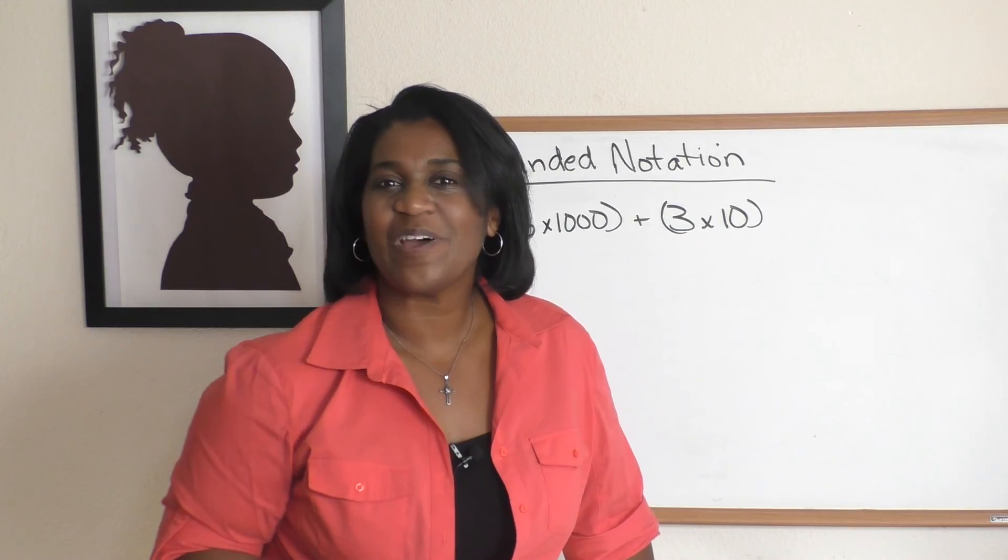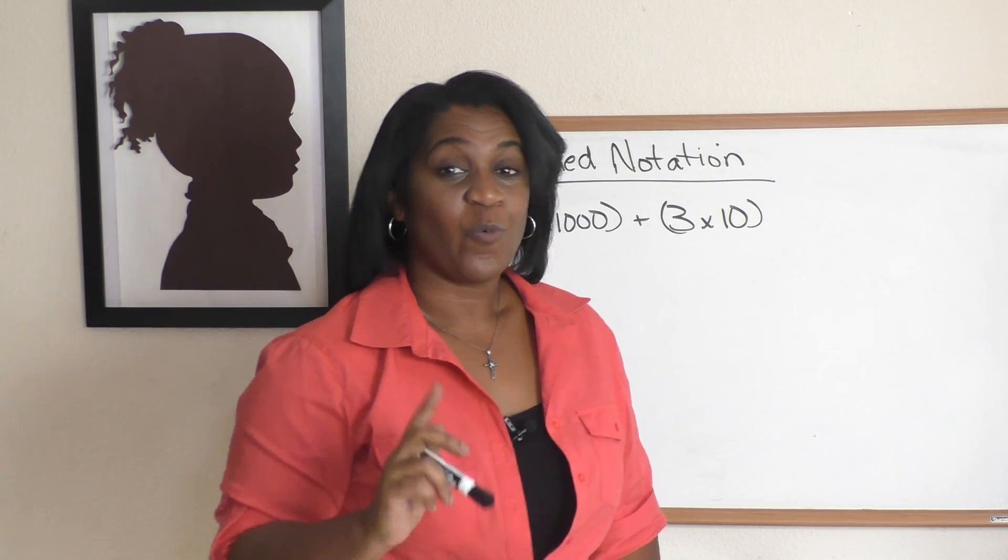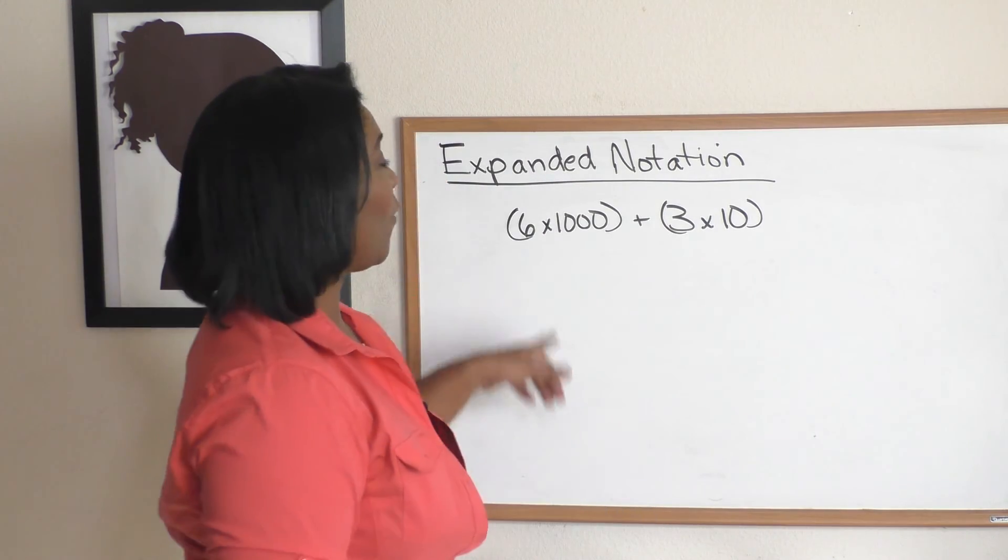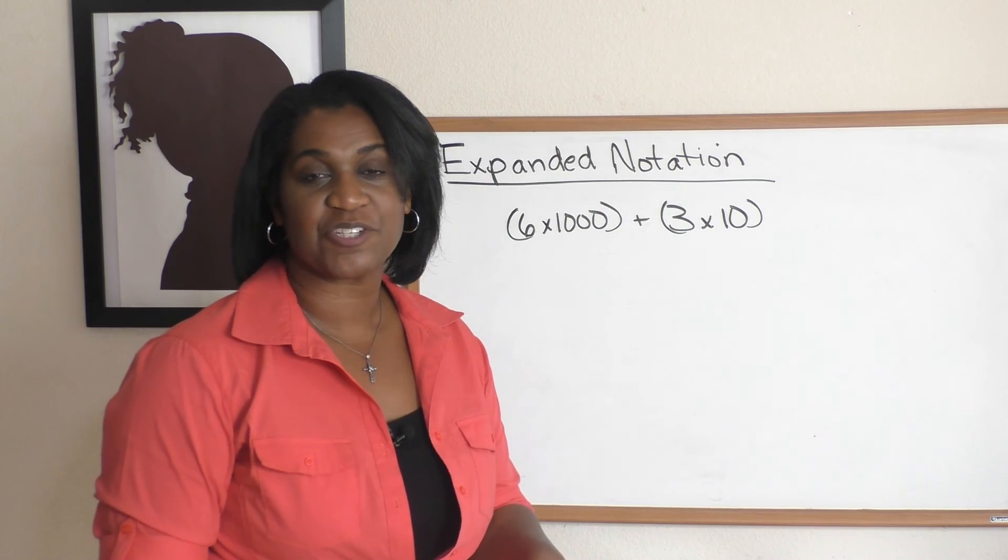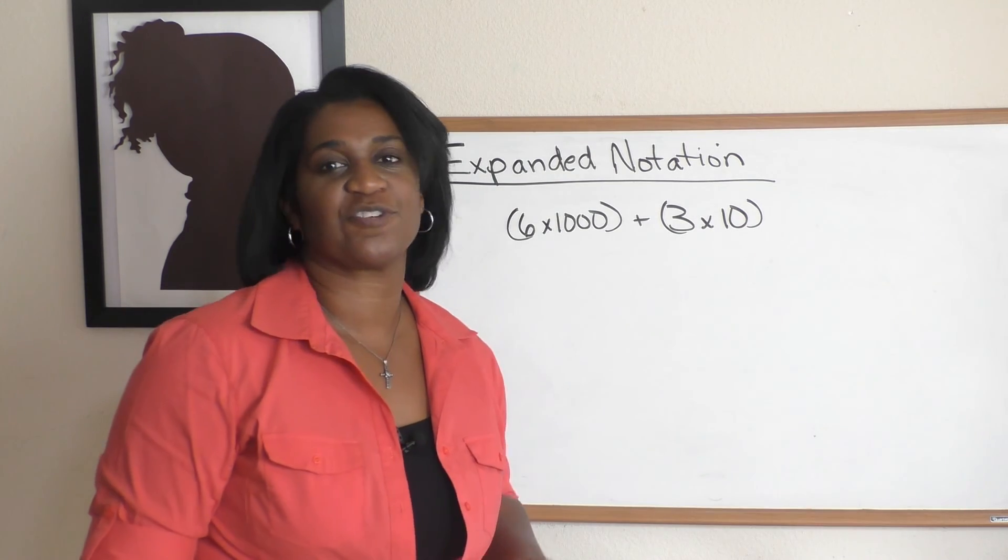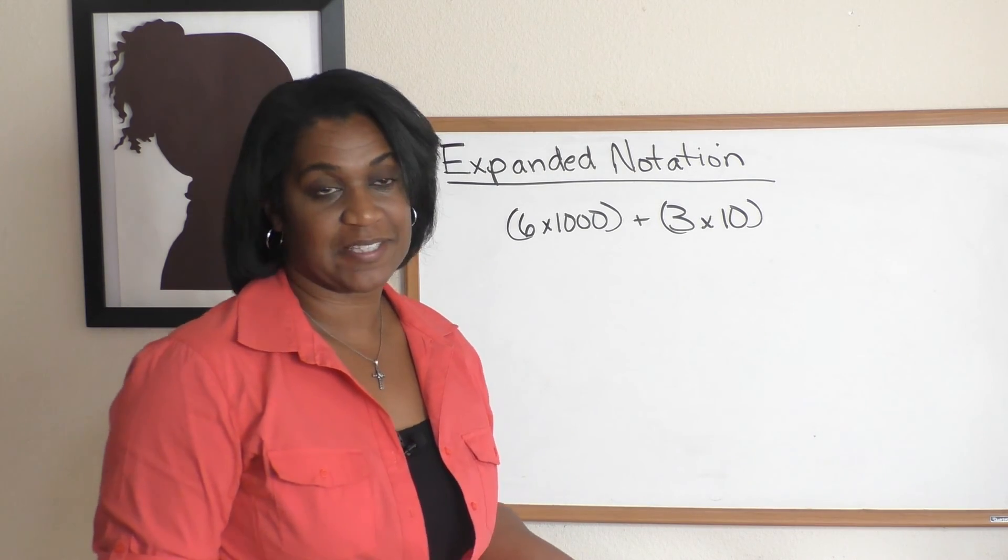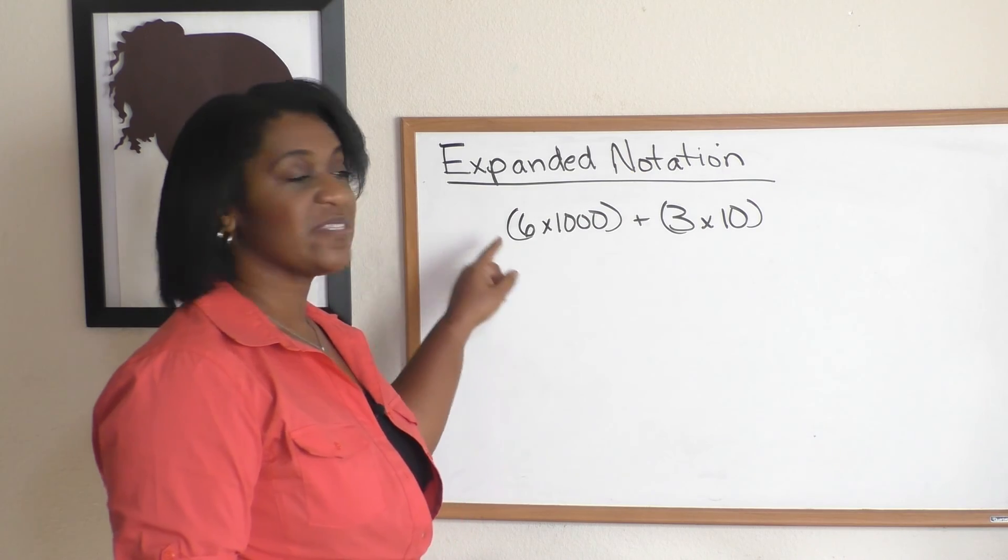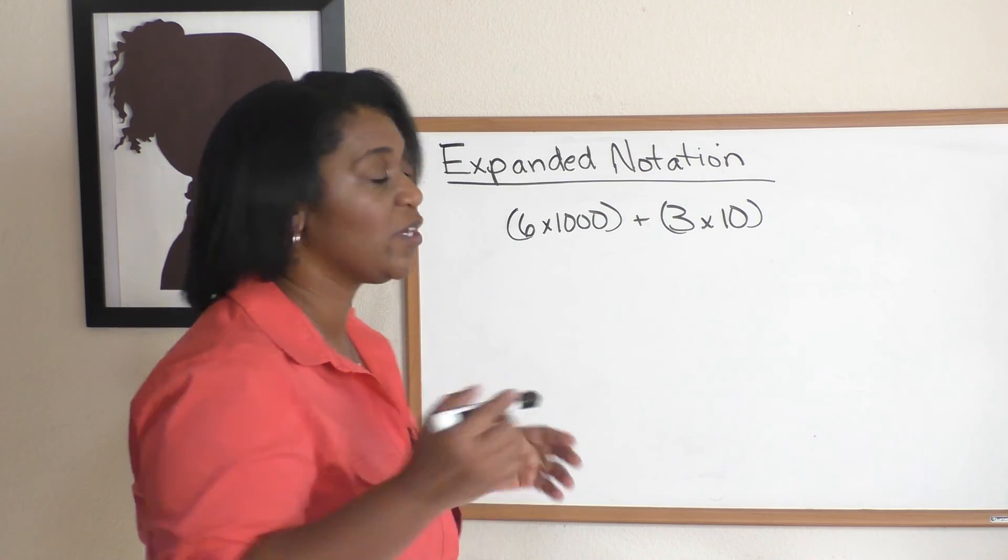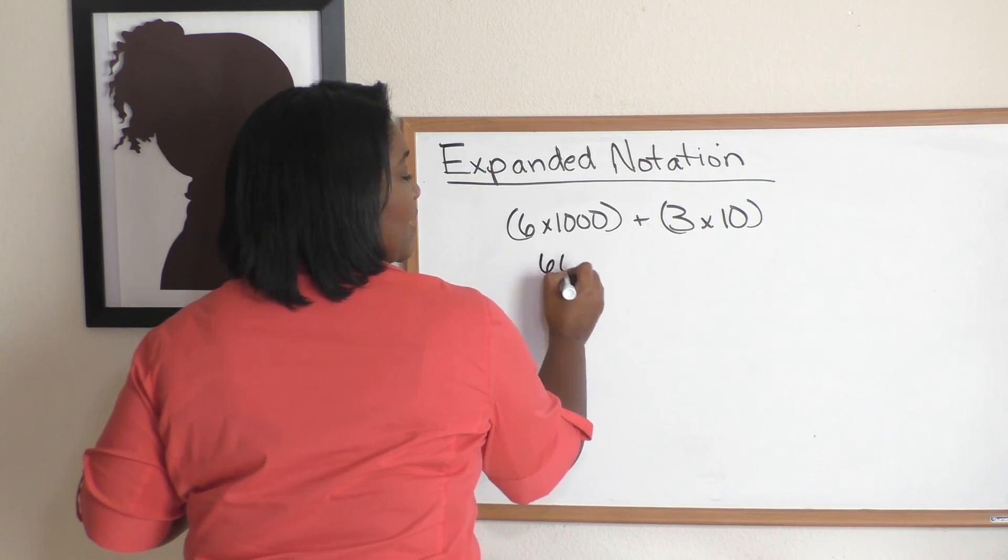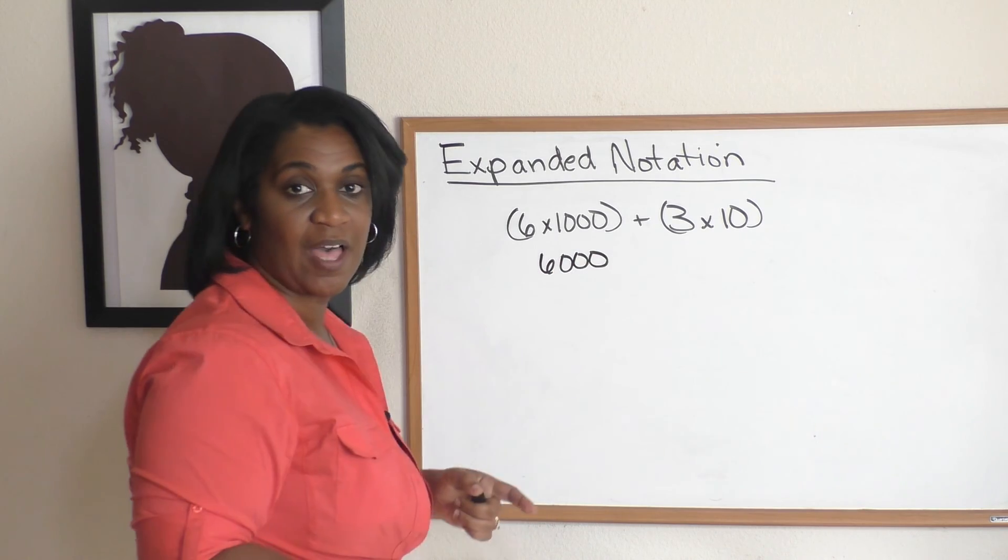I think you'll like this one. I've got one last problem for you. We also can go the other way. What if I gave you the expanded notation and I said, give me the standard notation for the number? Let's take a look at this example. So here we have six times one thousand, which we know is six thousand, plus three times ten.